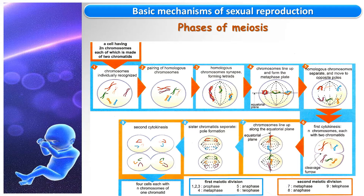Prophase I starts with the appearance of chromosomes, then they group, and finally they form tetrads. During metaphase I, chromosomes line up at the equator of the cell, forming the metaphase plate with pairs of homologous chromosomes. Then, during anaphase I, homologous chromosomes separate and migrate towards the opposite poles of the cell. At the end of the first meiotic division, during telophase I, the first cytokinesis takes place and the cytoplasm divides.